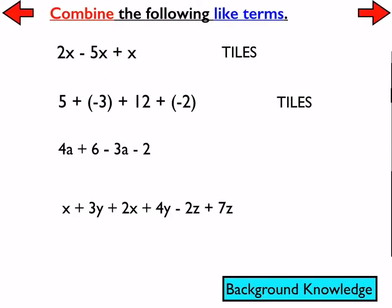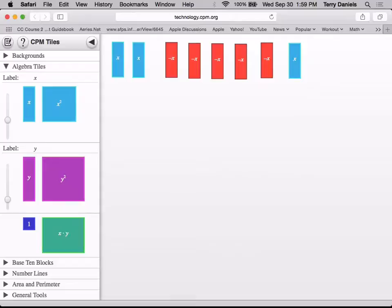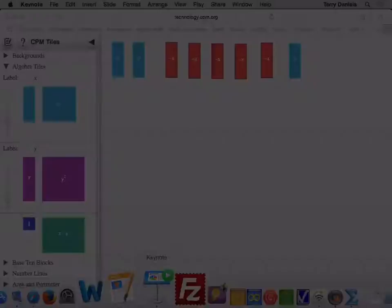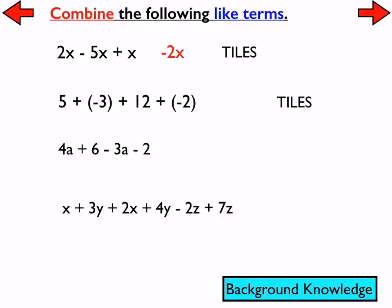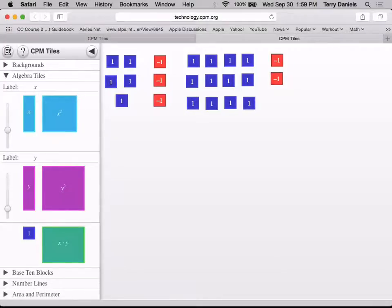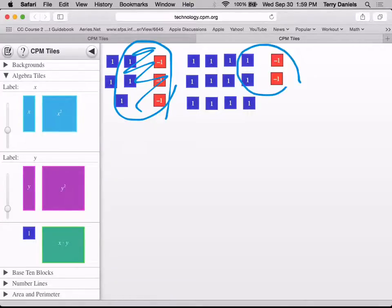We took a look at problems like this, and one of the things that we talked about is that sometimes tiles might give us a concrete example of what we're talking about. This was one that we looked at yesterday, and I talked about the idea of utilizing zero pairs. Zero pairs make zero, and that can help us simplify or figure out what our expression simplifies to. In this case, that would be negative 2x.